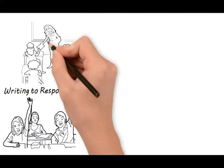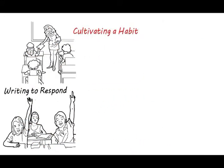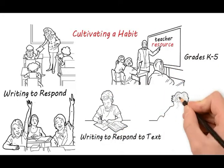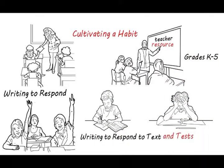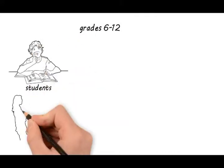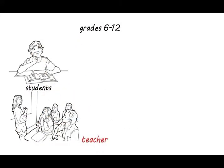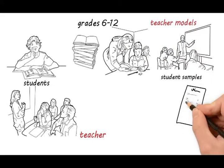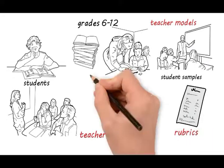There are two texts. Writing to Respond: Cultivating a Habit, recommended as a teacher resource for grades K-5, and Writing to Respond to Texts and Tests, recommended for grades 6-12 as a student and teacher resource. Both books entail detailed explanation of the Writing to Respond process, teacher models, student samples, rubrics, and exercises.